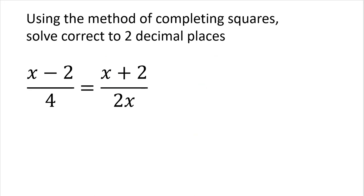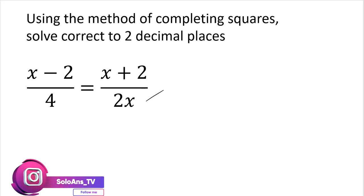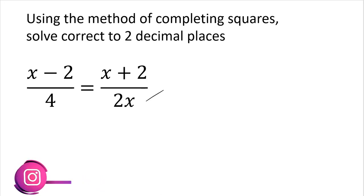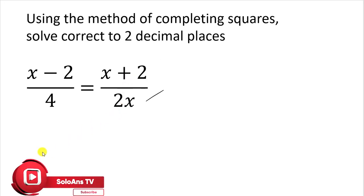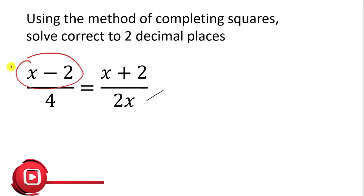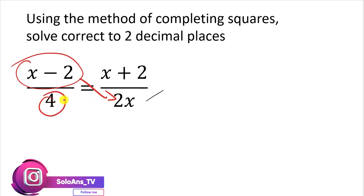The question is: using the method of completing squares, solve correct to two decimal places the equation we are having here. To solve this equation, we can do cross multiplication because we have one fraction on the left-hand side and another fraction on the right-hand side. This numerator is going to multiply this, and then this denominator is going to multiply this.